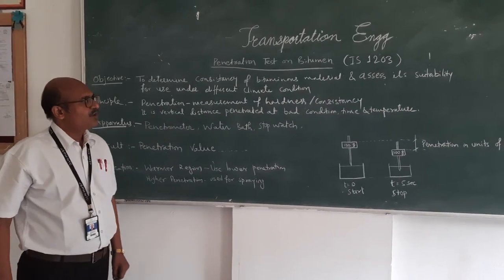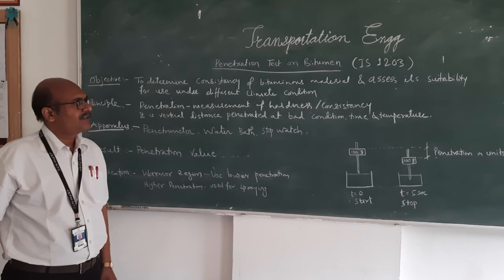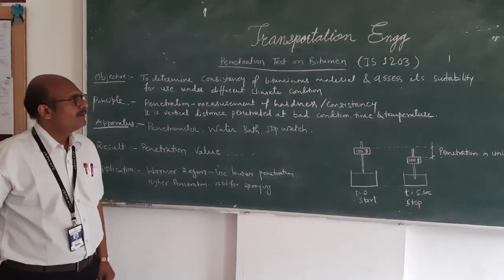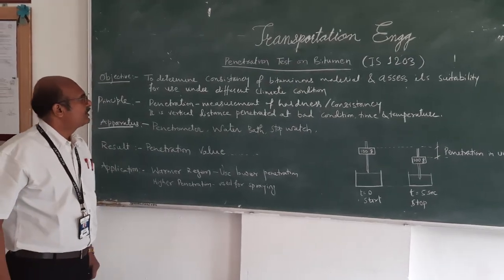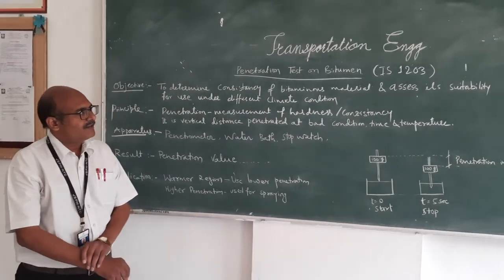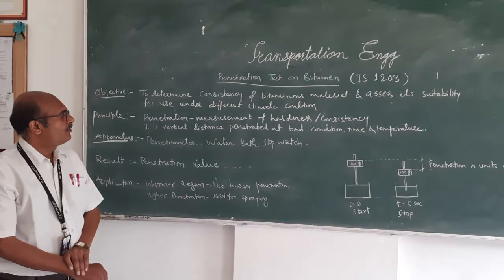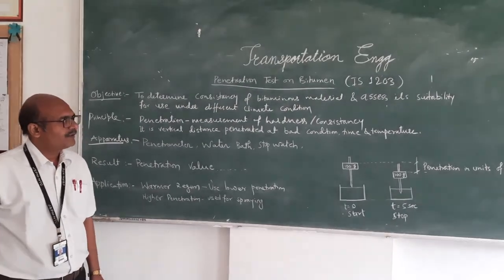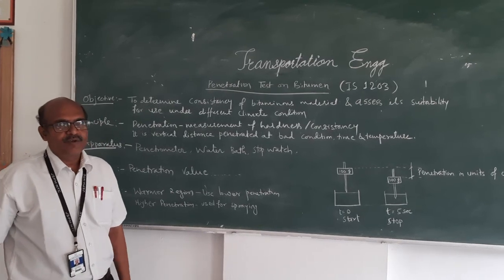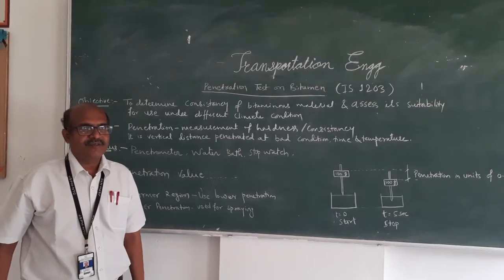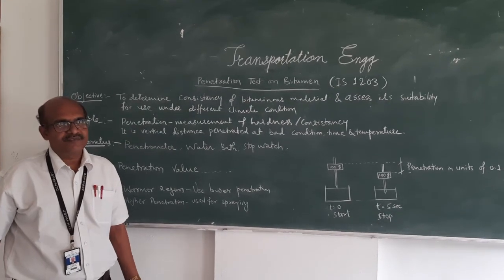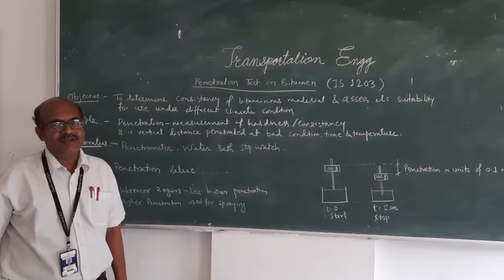This penetration test on bitumen is to be carried out as per IS code 1203. Our aim or objective is to determine the consistency of bitumen material and assess its suitability for use under different climatic conditions. What happens in summer seasons is the bitumen will somewhat separate from the aggregate, and in colder regions it will become very brittle.